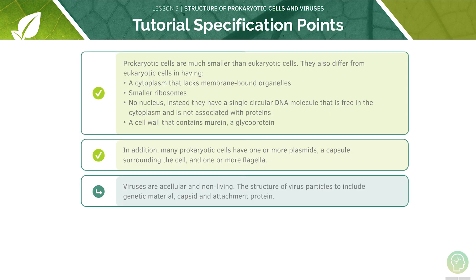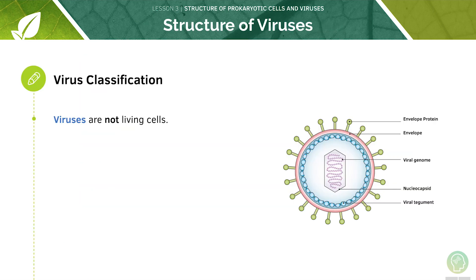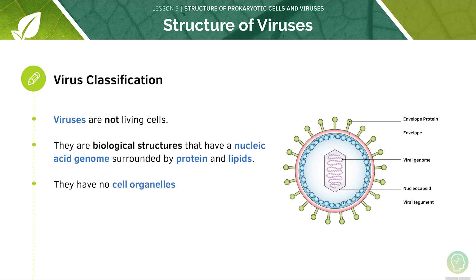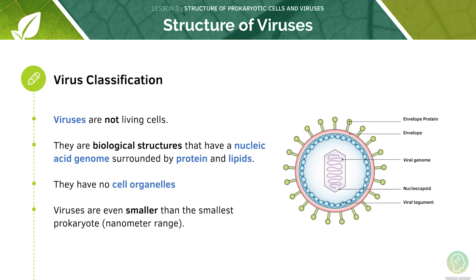Now let's look at viruses. Viruses are not living cells. Instead, they are biological structures which have a nucleic acid genome surrounded by protein and lipids. They have no cell organelles, meaning that they don't have a nucleus, ribosomes, or any of the membrane-bound organelles. Viruses are even smaller than the smallest prokaryote, going into the nanometre range.